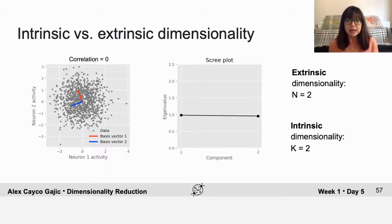And in the scree plot, you can see this because the two components have the same eigenvalue, suggesting that they have the same amount of variation in both of these directions.